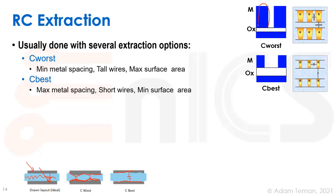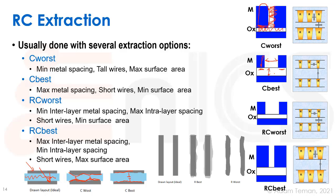In C-worst, wires are very wide and close together with a lot of adjacent surface area, both side-to-side and top-to-bottom. In C-best, wires are farther apart, shorter, not as wide, with a bigger distance between layers. These are two options you can provide to an extraction tool — for example, with Cadence using the QRC tech file — to get a C-worst and a C-best extraction. However, this doesn't account for resistance.